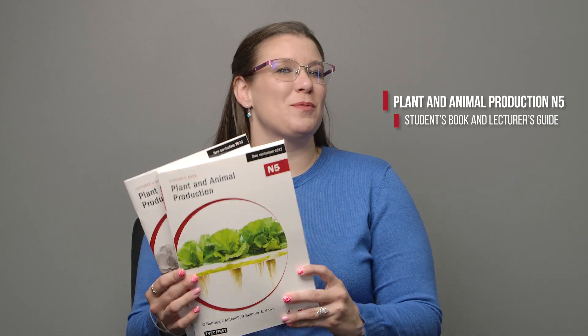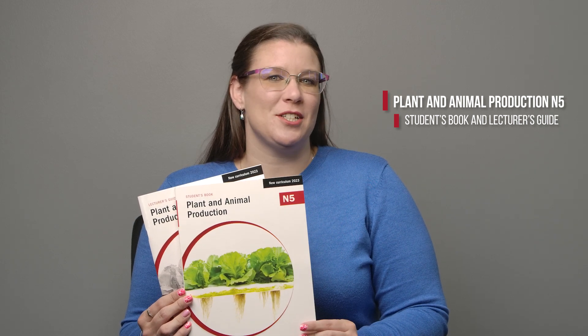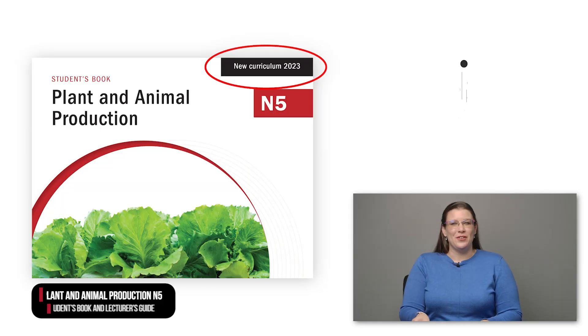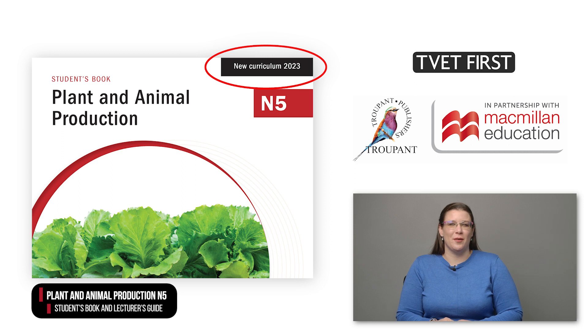This new curriculum will be implemented in July 2023 for the first time. Lecturers and students will need new textbooks that they can trust to teach the correct content and help students to achieve their best marks. We recommend TVET First's Plant and Animal Production Students' Book and Lecturer's Guide, approved by the DHET. The logo 'New Curriculum 2023' tells you that this book covers the 2023 curriculum in full.